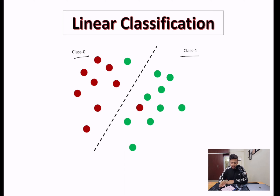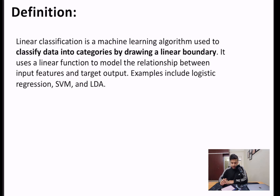As you can see in this diagram, we have a few of the points plotted. And the goal is to find a linear line which will separate these data points into two classes. So let us start by understanding the definition of linear classification.